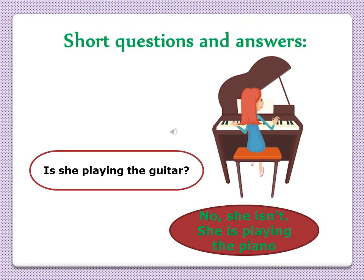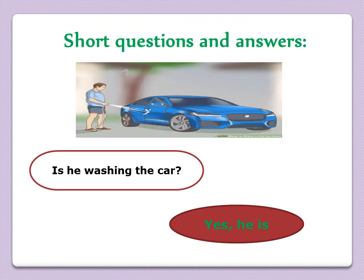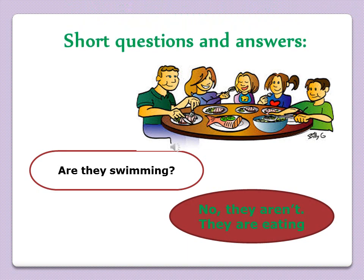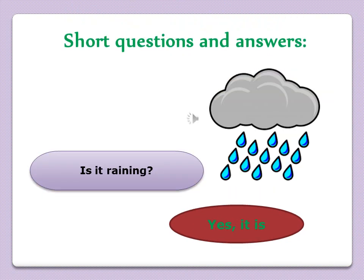Now let's look at some short questions and answers. Look at the picture — is she playing the guitar? No, she isn't. She is playing the piano. Another one: is he washing the car? Yes, he is. Look at the picture — are they swimming? No, they aren't. They are eating. These examples show the present continuous for actions taking place at the moment.